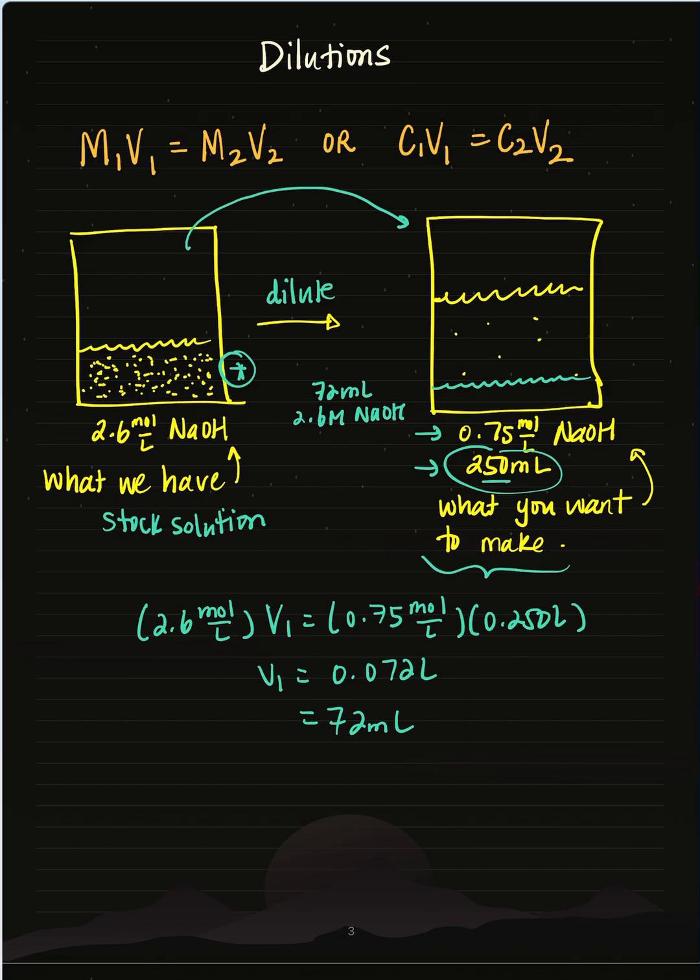But remember I wanted to make 250 ml of it. So to get the solution to be 250 ml, I actually have to top up the remainder with water. So 250 minus 72 is 178 milliliters of water that goes on top.